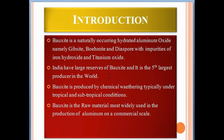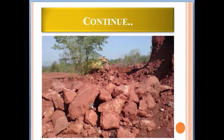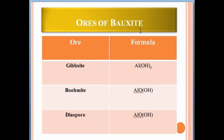India is the fifth largest producer of bauxite in the world. Bauxite is produced by chemical weathering, typically under tropical and subtropical conditions. It is the raw material most widely used in the production of aluminum on a commercial scale. There are three bauxite ores: gibbsite, boehmite, and diaspore, and most of the aluminum is extracted from these ores.